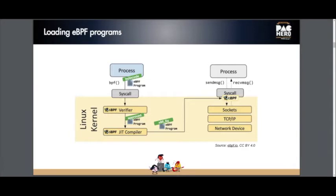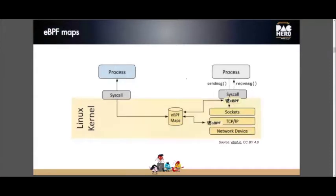We also need a mechanism to access data generated by the eBPF program. In our case we want to measure block I/O latency, so we need to store the timestamp when a block I/O request starts, then when it finishes calculate the delta. For sharing data between eBPF programs and user space, we use eBPF maps. The eBPF program reads and writes data to eBPF maps, and a user-space program reads those maps via another syscall.